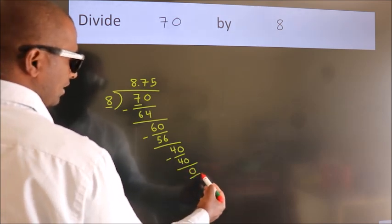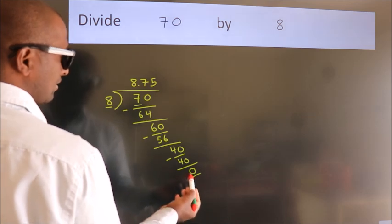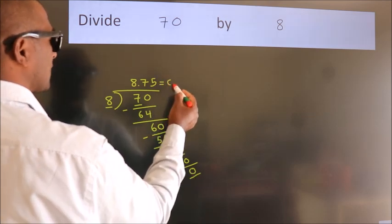Here we got remainder 0. So this is our quotient: 8.75.